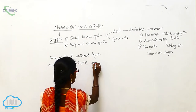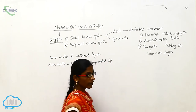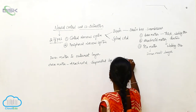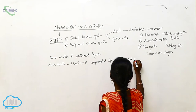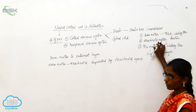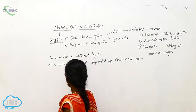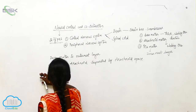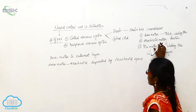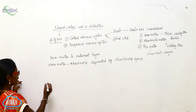The Dura Mater and Arachnoid Mater are separated by the arachnoid space. Similarly, the Arachnoid Mater and Pia Mater are separated by the subarachnoid space.